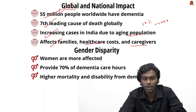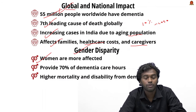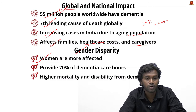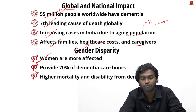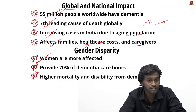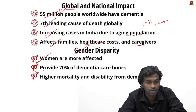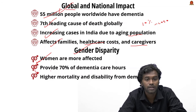Regarding gender disparity, women are most affected by brain disorders like dementia and Alzheimer's — mortality rates and disability from these conditions are very high in women. At the same time, women also play a key role in dealing with these problems, providing around 70% of total dementia care hours.